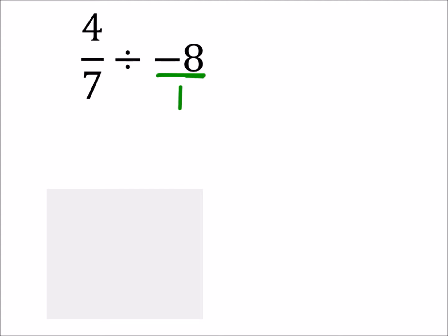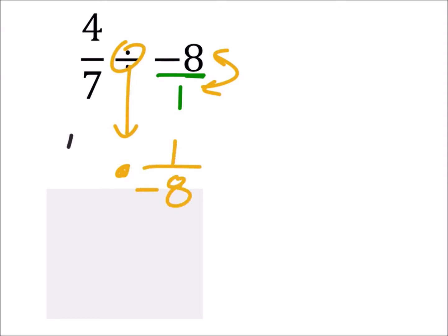Let's go ahead and change this division to a multiplication problem by reciprocating the divisor, which would make that 1 over negative 8. And we've still got our 4 sevenths. So now it's just fraction multiplication.